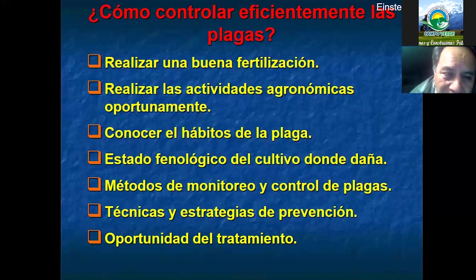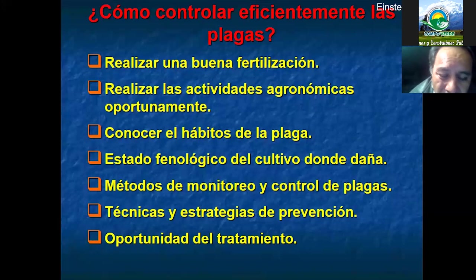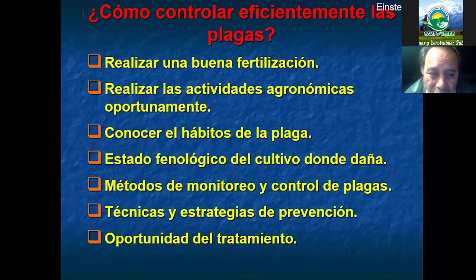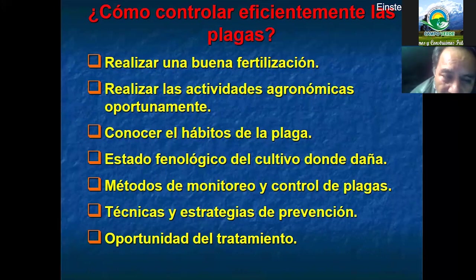El agricultor tiene que aprender a realizar cada una de las actividades oportunamente. El otro problema es que el agricultor no conoce los hábitos de crecimiento o de vida de la plaga o el insecto que nos causa daño. Nos falta familiarizarnos con las condiciones del insecto para poder batirlo o eliminarlo. Conociendo ese hábito, podríamos fácilmente controlarlo. También es importante el estado fenológico del cultivo: por ejemplo, dentro de la etapa de la floración tenemos bastante el ataque del trips, entonces ya es momento de prevenirse.